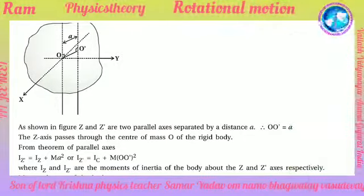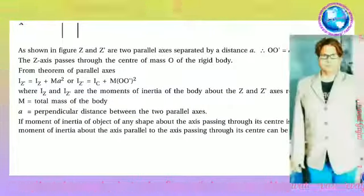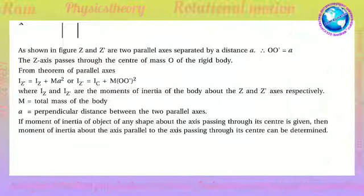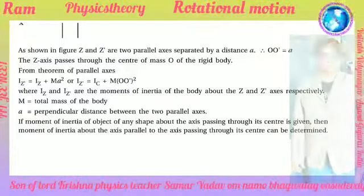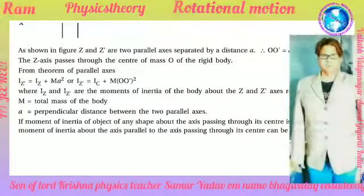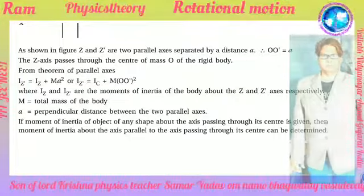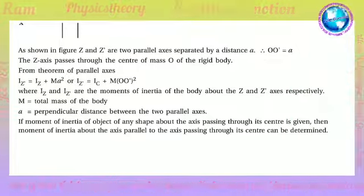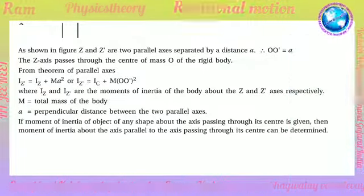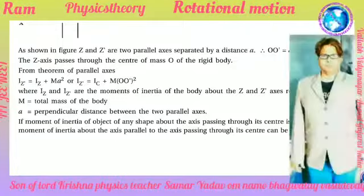From the theorem of parallel axis: I_z' = I_z + Ma^2, or I_z' = Ic + M*(OO')^2, where Iz and I_z' are the moments of inertia of the body about the z and z' axes respectively, M is the total mass of the body, and A is the perpendicular distance between the two parallel axes. If the moment of inertia about an axis through the center of mass is known, the MOI about any parallel axis can be determined.